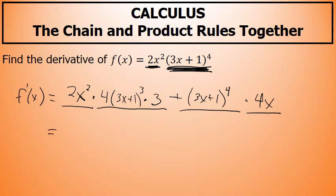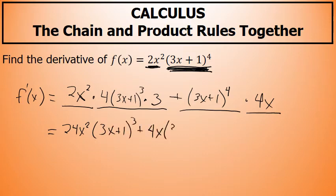Cleaning things up a little bit: 2x squared times 4 times 3 is 24x squared times 3x plus 1 to the third power, plus 4x times 3x plus 1 to the fourth power.